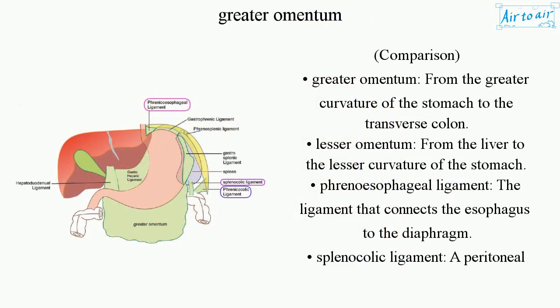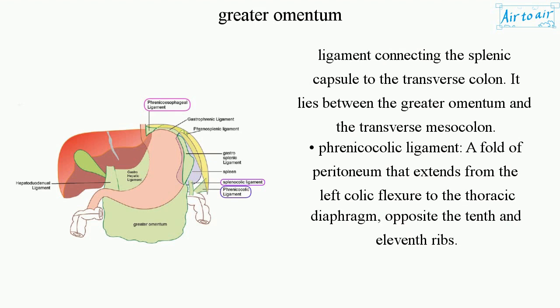Comparison: the greater omentum extends from the greater curvature of the stomach to the transverse colon; the lesser omentum extends from the liver to the lesser curvature of the stomach; the phrenoesophageal ligament connects the esophagus to the diaphragm; the splenocolic ligament is a peritoneal ligament connecting the splenic capsule to the transverse colon, lying between the greater omentum and the transverse mesocolon; the phrenicocolic ligament is a fold of peritoneum extending from the left colic flexure to the thoracic diaphragm opposite the 10th and 11th ribs.